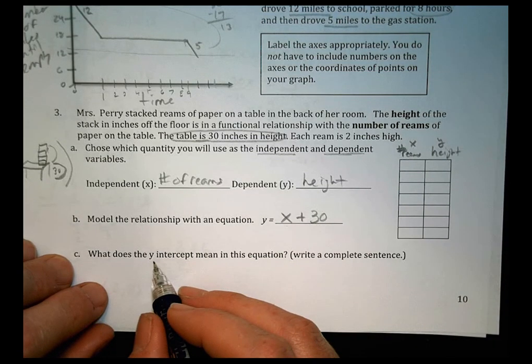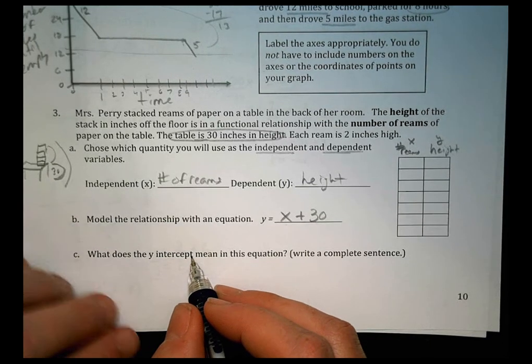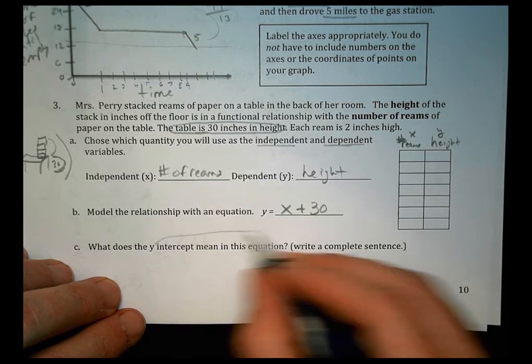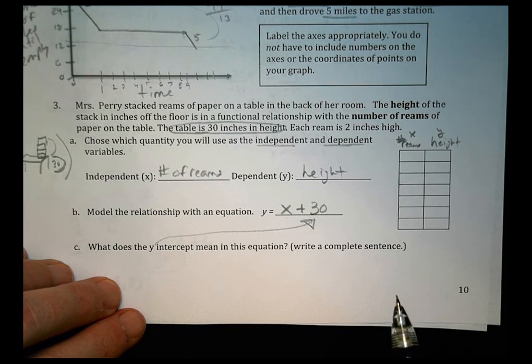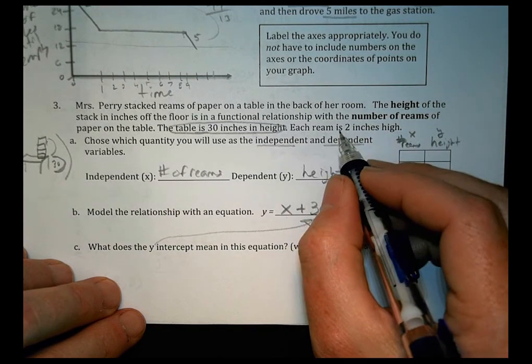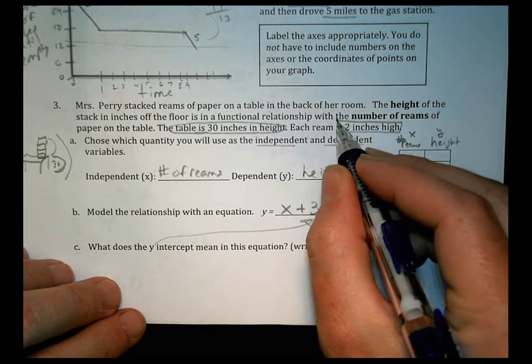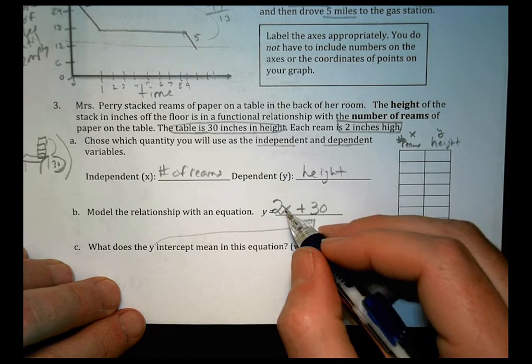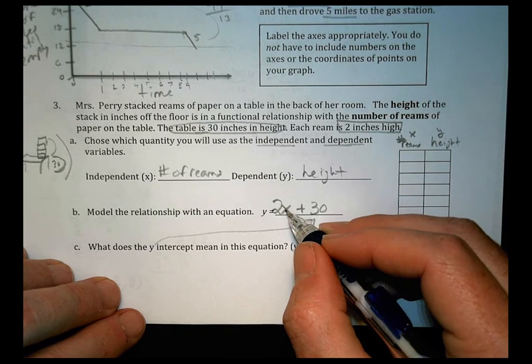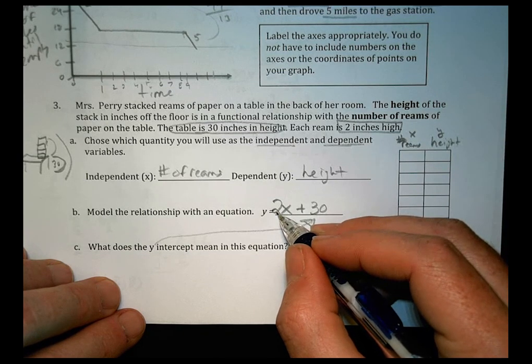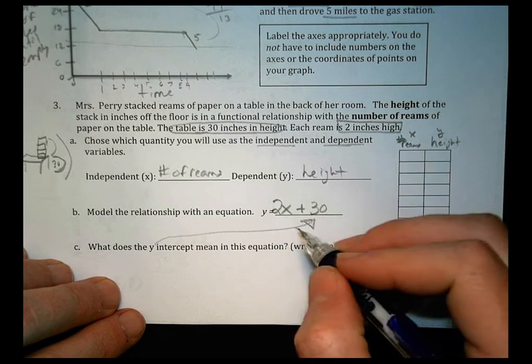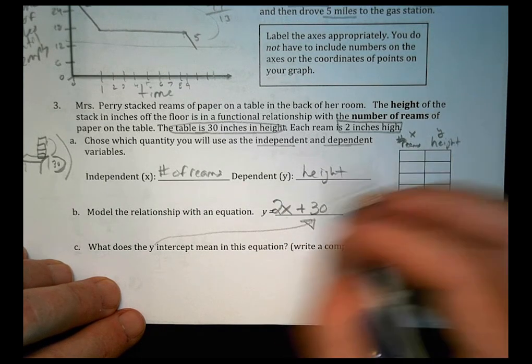It says, what does the y-intercept mean in this equation? So the y-intercept, you think about this. What's the y-intercept? It's 30. What does that 30 mean? So write a sentence about what that 30 means. Oh, I got to back up real quick. It says that each ream is two inches high. So sorry about that. I need to include a two right there because that's the amount I want to increase by. So if I have one ream, it's two inches plus a 30. If I have two reams, it's four inches. So I got to include the two. Almost forgot about that.